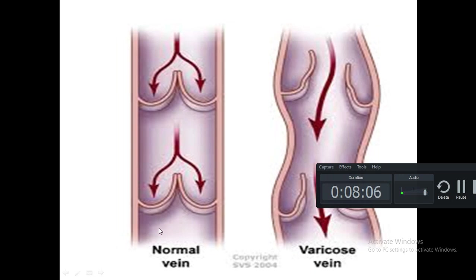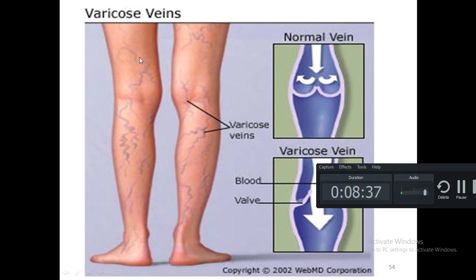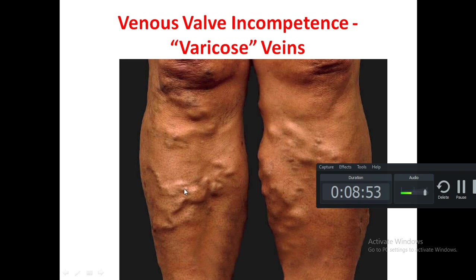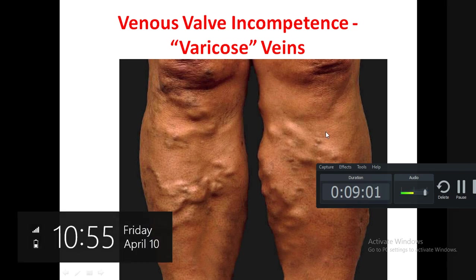In a normal vein, blood flow in the downward direction is not possible because of the competency of the venous valves. In varicose veins, the venous valves are not approximated with each other, so blood leaks downward — away from the heart — causing the varicose veins. You can see in the patient the dilated, very torturous, and elongated leg veins visible under the skin, and the leg also shows edema.